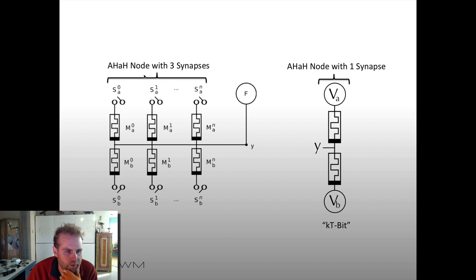So here's an example. We have an AHA node with three synapses on the left and on the right we have an AHA node with one synapse. We also call this a KT bit or thermodynamic bit for short and we use this in some combinatorial optimization problems.